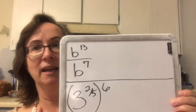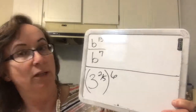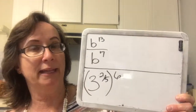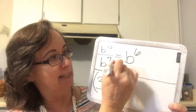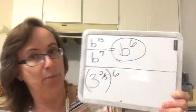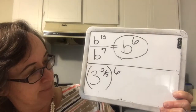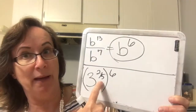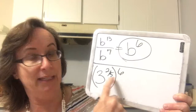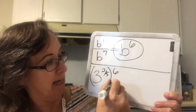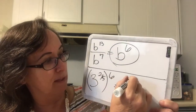Division of like bases — we subtract the exponents. So we get b to the 6th, which is positive, and that would be the final answer. Then here, raising a power to another power, I multiply the two together and get 3 to the 12/5.